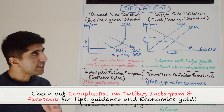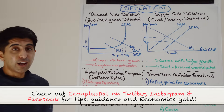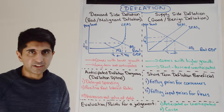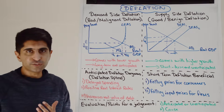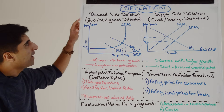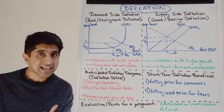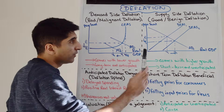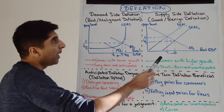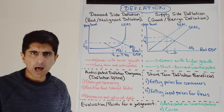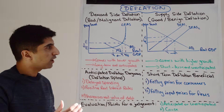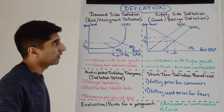That sounds like a great thing but it's not as simple as that. There are two types of deflation: demand-side deflation and supply-side deflation. Demand-side deflation is also known as bad deflation — yes, that is a technical term — also known as malignant deflation. Supply-side deflation is known as good deflation, also called benign or harmless deflation. On a diagram, demand-side deflation occurs when AD shifts to the left; supply-side deflation occurs when SRAS shifts to the right.